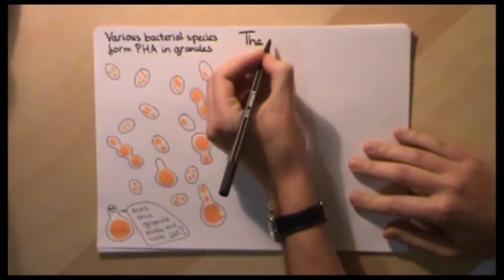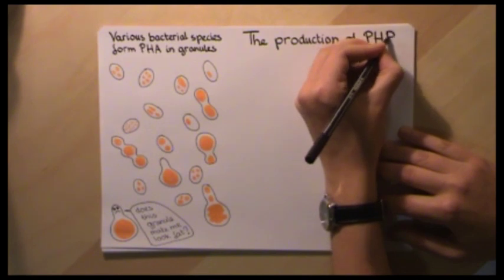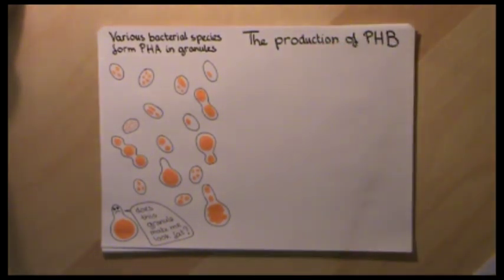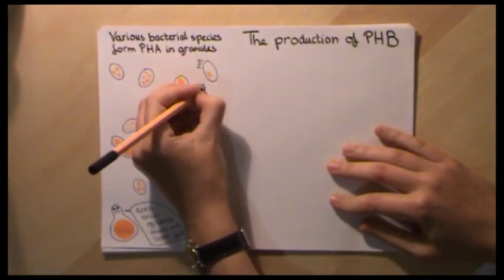To answer this question, we'll zoom in on a hypothetical bacterium forming a PHA. In this case, polyhydroxybutyrate, or PHB.